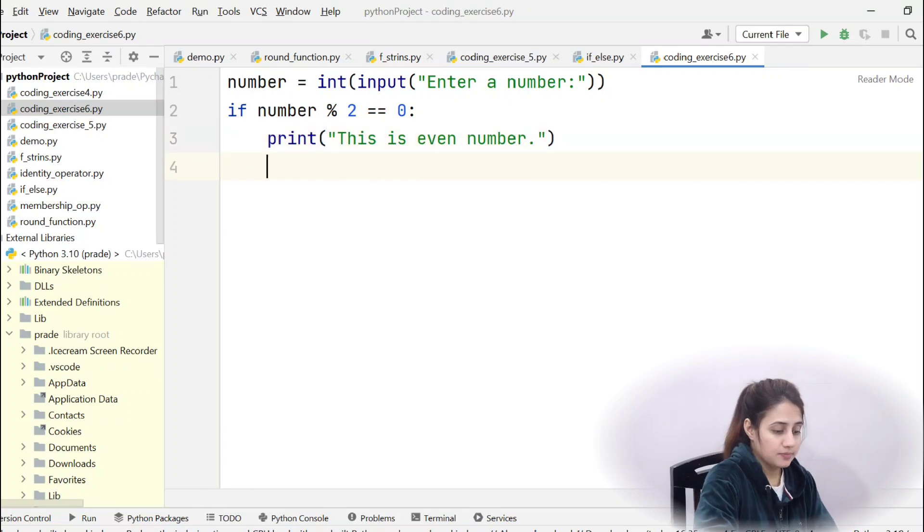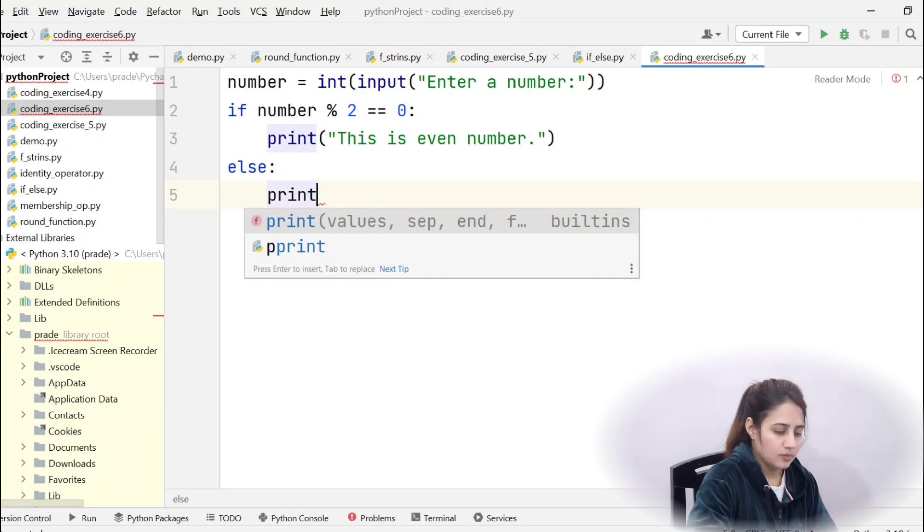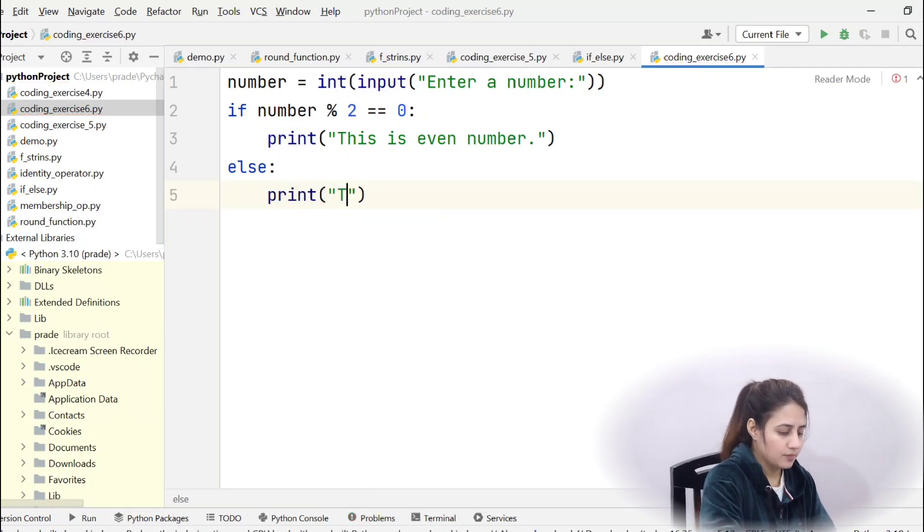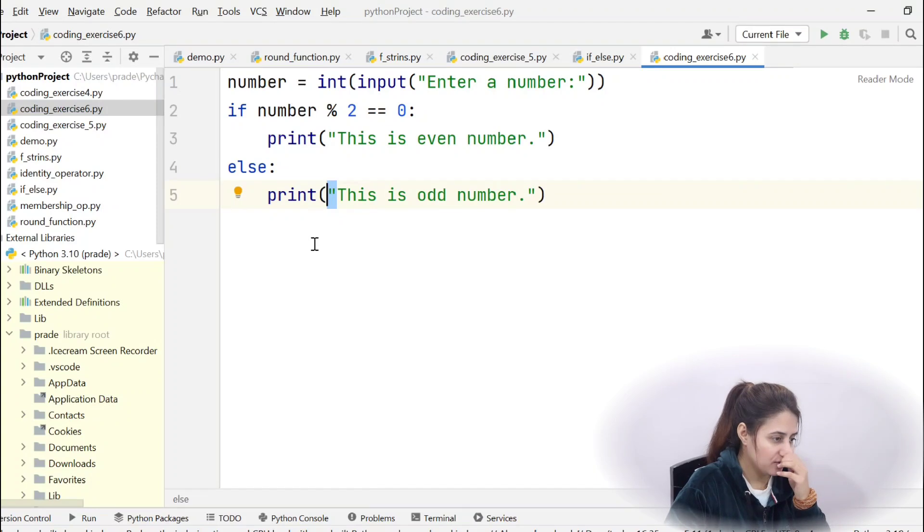Else, colon, what will we print? This is odd number. You can put this in single quotes also. Actually I am from that C++, C, or Java background, that's why I put double quotes, but you can use single quotes, that is also fine.